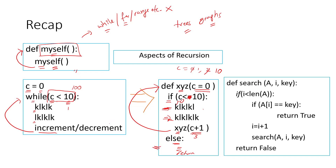So this is what happens in our recursive function — it is the equivalent of this particular iterative function. Then we looked at a concrete example where we looked at a search operation using recursion. This search operation is very basic. We searched for a particular element inside an array.